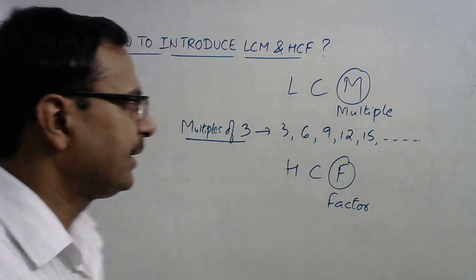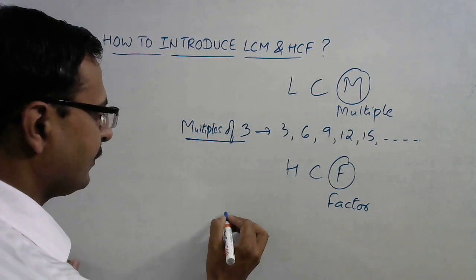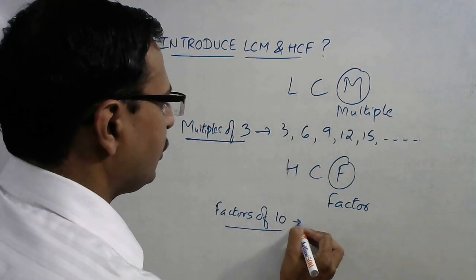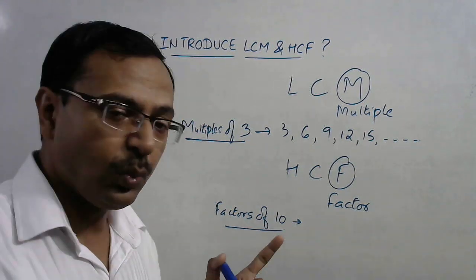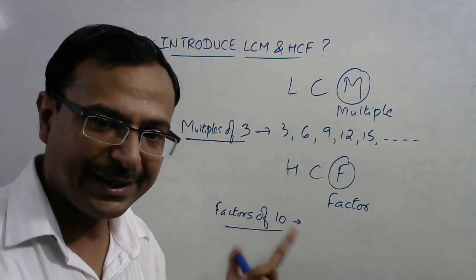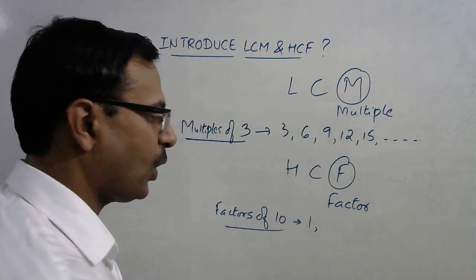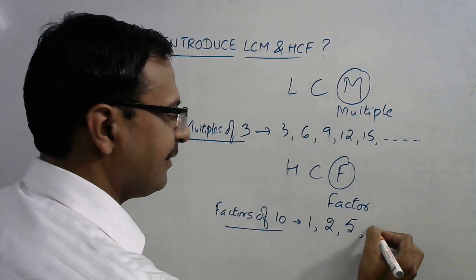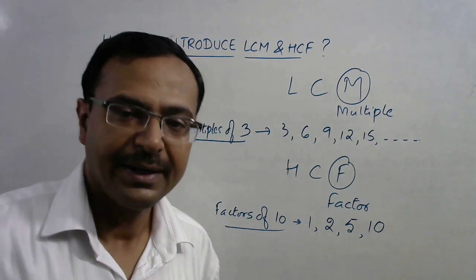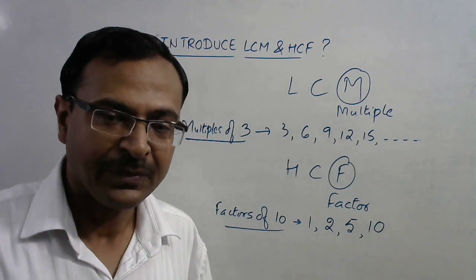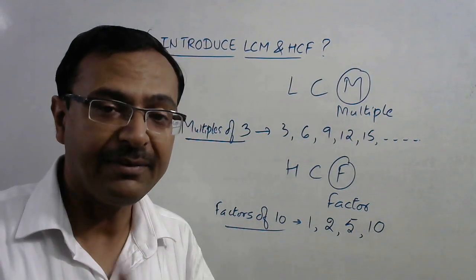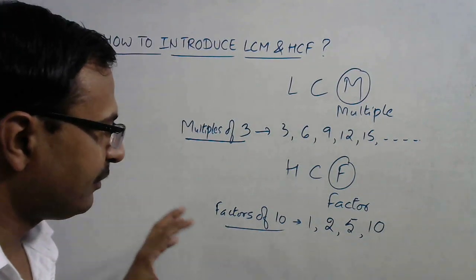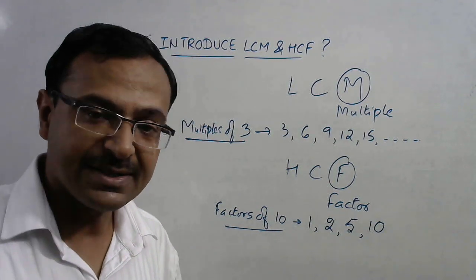Now come to factors. Suppose you need the factors of 10. Ask the students which numbers are the exact divisors of 10. They will tell you: 1 is a divisor of every number, 10 appears in the table of 2, the table of 5, and the table of 10 itself — so there are four factors of 10. Mind you, these are factors, not prime factors. That distinction is one we often fail to introduce clearly to students.